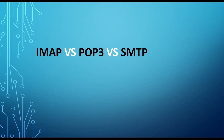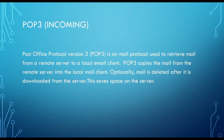So IMAP vs POP3 vs SMTP — what is POP3? POP3 is a protocol which helps for incoming mail automation. The full form of POP3 is Post Office Protocol version 3. It is a mail protocol used to retrieve mail from a remote server to a local email client. POP3 copies a mail from the remote server into the local mail client, and optionally the mail is deleted after it is downloaded from the server — this saves space on the server. So POP3 is a protocol used for retrieving emails from a remote server to a local email client, helping to automate retrieving emails from your Gmail account.